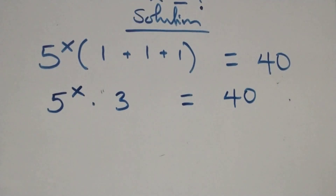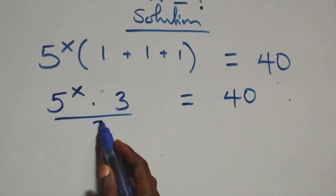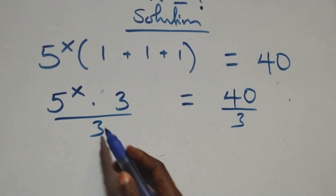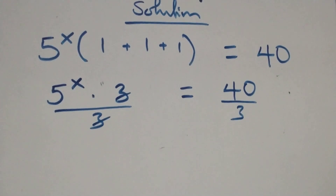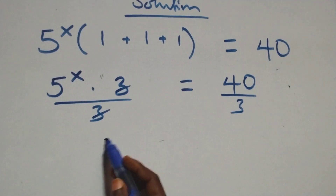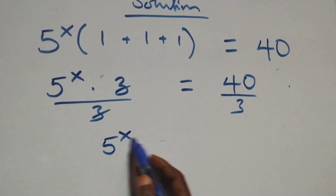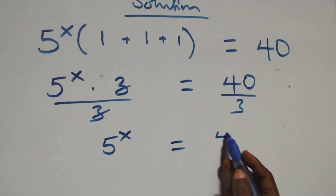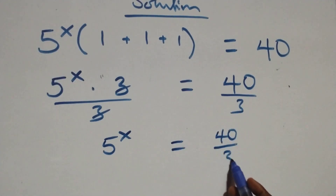The next step: divide both sides by 3. The 3s cancel each other, and we have 5 raised to power x equals 40 over 3.